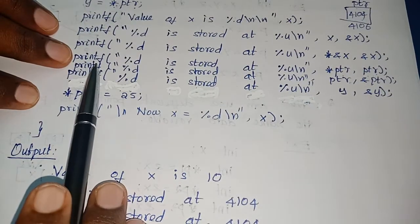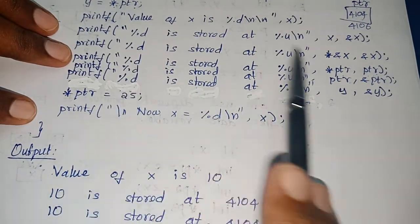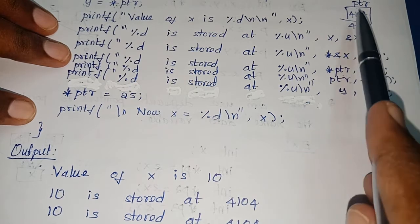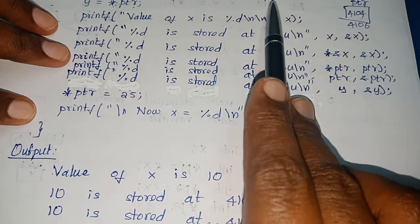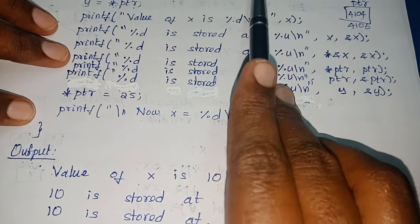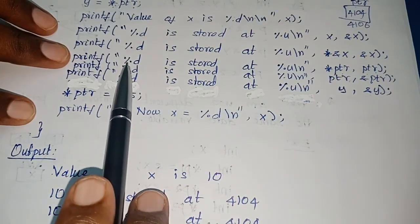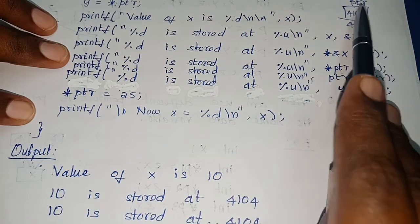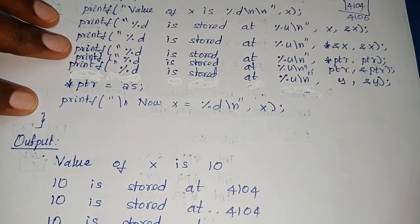The fourth printf: '%d is stored at %u' with *ptr and ptr. What is *ptr? It goes to address 4104 and collects the value — so 10 is printed. What is ptr? Its value is 4104. So output: 10 is stored at 4104. All of these statements produce the same result — just different ways of printing the values and their address.